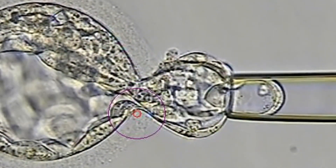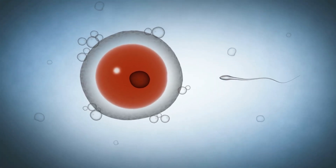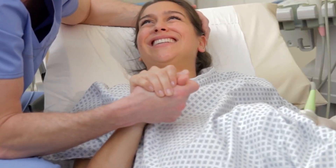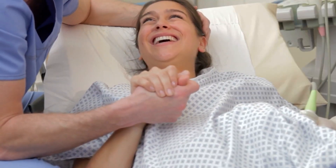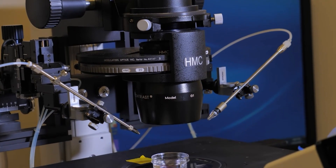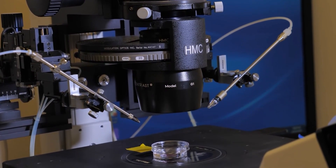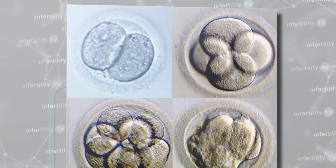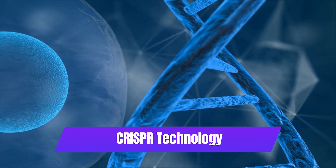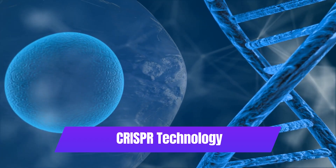Selected healthy embryos are then chosen for transfer into the woman's uterus, where they have the potential to implant and develop into a pregnancy. Any remaining viable embryos may be cryopreserved for future use. IVF has provided hope and enabled many couples who struggle with infertility to conceive. It can also be used in various reproductive technologies such as gestational surrogacy or pre-implantation genetic diagnosis (PGD) for screening genetic disorders.